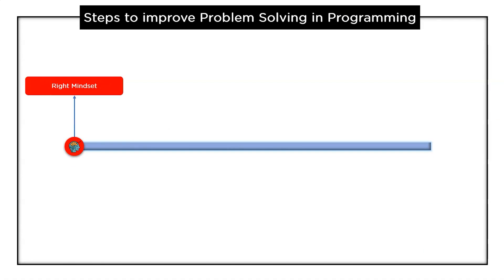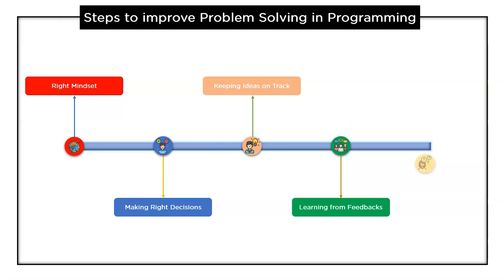The first one is the right mindset. Followed by that we have making right decisions. Next we have keeping ideas on track. Followed by that we have learning from feedbacks. And finally we have asking questions. Let's discuss each one of them in detail.